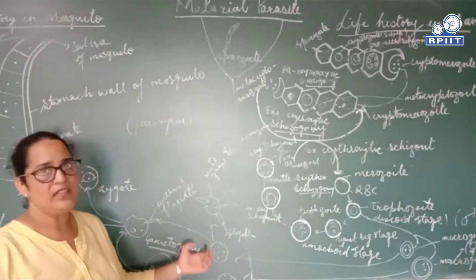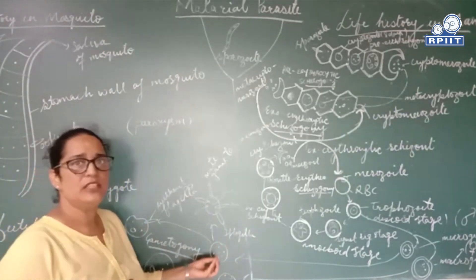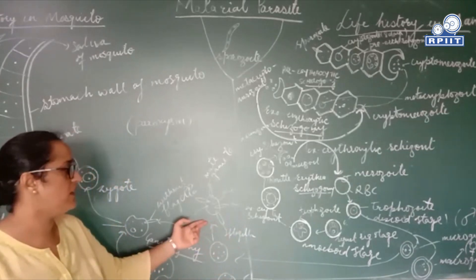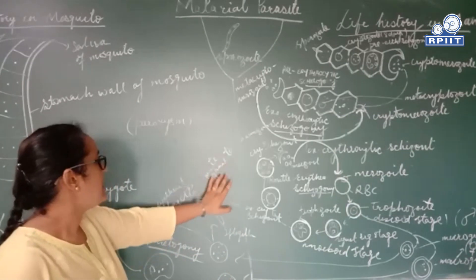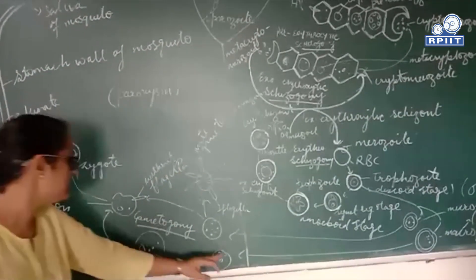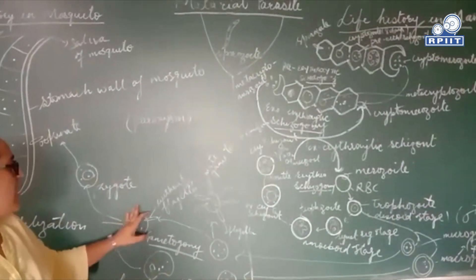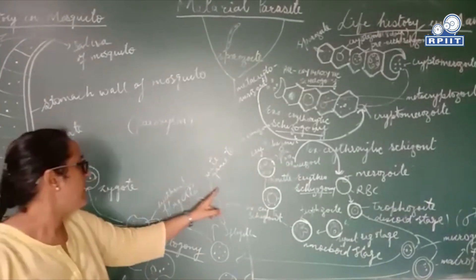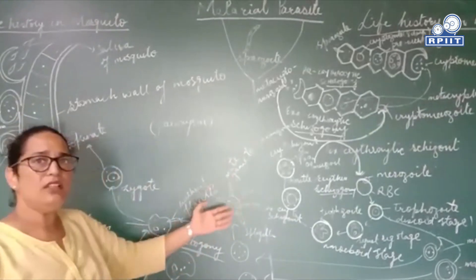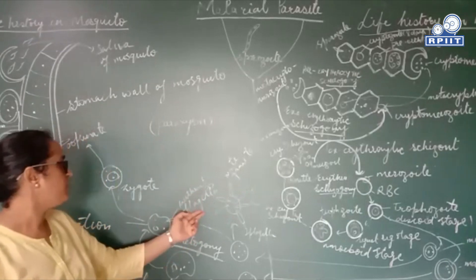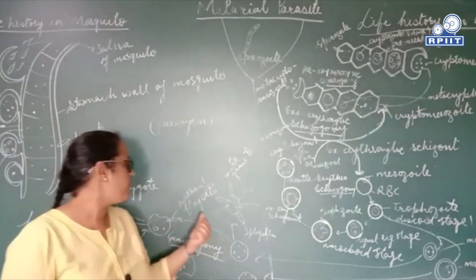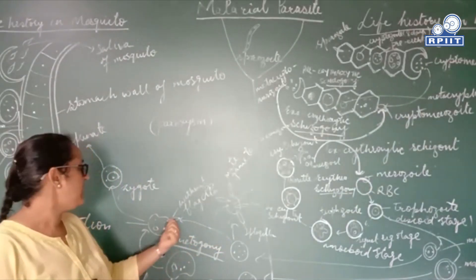The macro and micro gametes — female and male gametes respectively — are inside the RBCs. After entering the mosquito's body, they burst out of the RBC. The macrogametocyte does not divide, whereas the microgametocyte, the male gamete, undergoes multiple divisions. The male gametes acquire flagella to become mobile toward the female gametes. The female macrogametocyte acquires a cone of reception where the male gamete will fuse for fertilization. The male gametes shed their flagella and take a spindle shape to penetrate the female gamete. Millions of male gametes attack the female gamete, but only one fertilizes it.